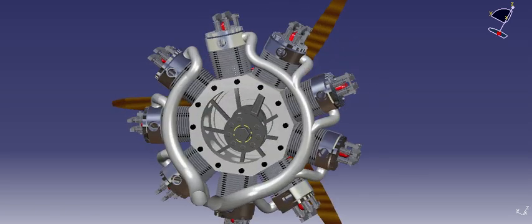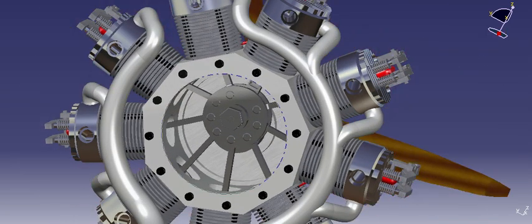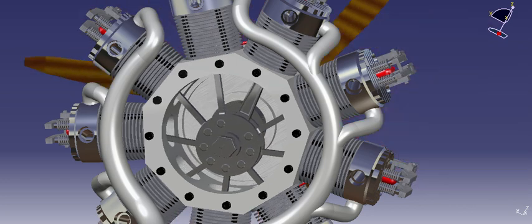In the first view you can see the mother conrod connected to the crankshaft and the little conrods.